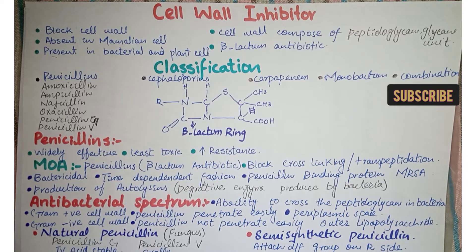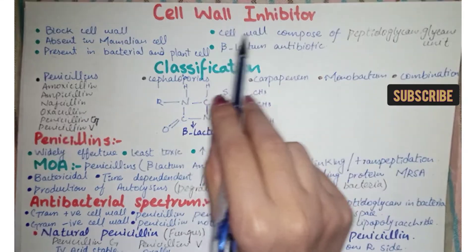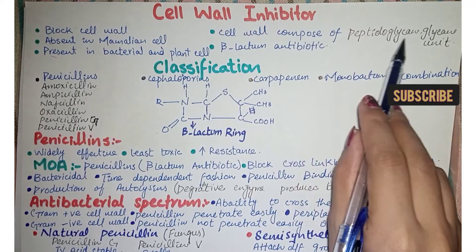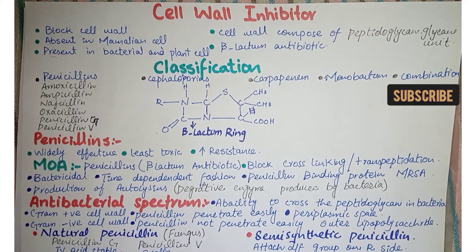Cell wall inhibitors specifically block cell wall synthesis. Bacteria ke andar jo cell wall hoti hai, uski synthesis ko block karna cell wall inhibitor ka kaam hai. Cell wall is composed of peptidoglycan and glycan units — yeh polymer hota hai jo bacteria ki cell wall ko compose karta hai.